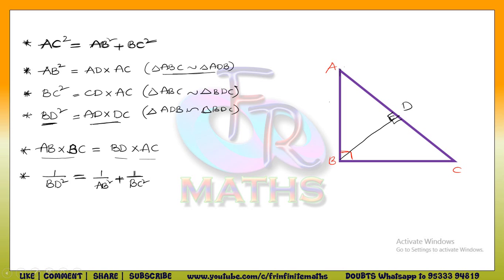To simply remember: AB into BC is an L-shape product, and BD perpendicular to AC is a T-shape. So the L-shape product equals the T-shape product. The last result is 1 by BD squared equals 1 by AB squared plus 1 by BC squared. I hope you have understood this concept. We are going to solve problems using these results in our next video. Thank you for watching.